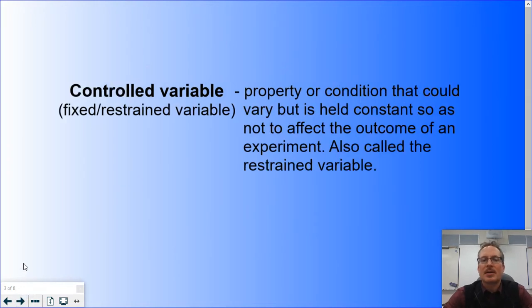A controlled variable is also called a fixed variable or a restrained variable. These are the variables that you intentionally are keeping constant throughout each of the different trials through the whole experiment. This is something that you have intentionally, on purpose, decided to control in the lab.